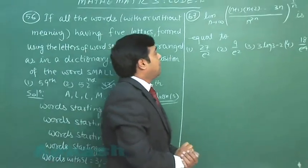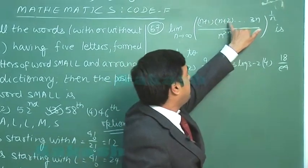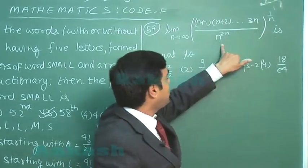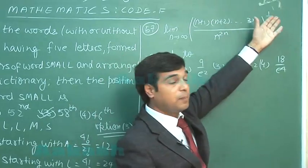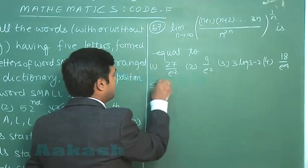Moving to the next one. Limit n approaching to infinity (n+1)(n+2) up to 3n divided by n² whole raised to the power 1/n is equal to. Let us try this one.